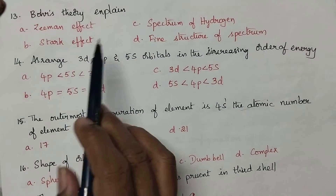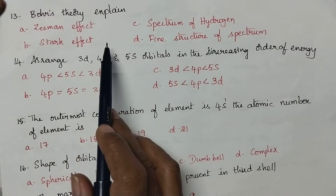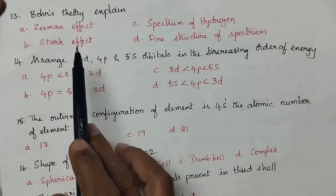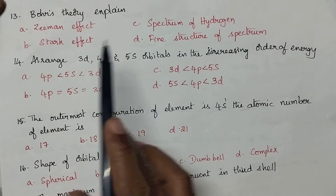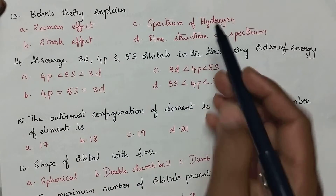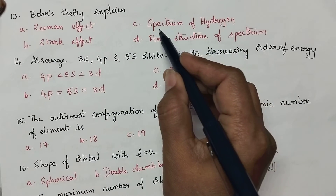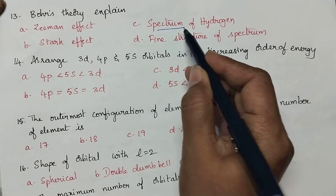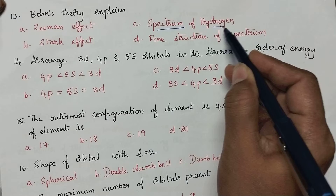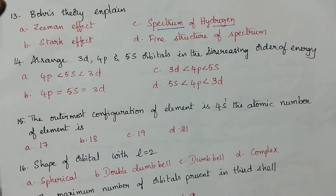Bohr's theory explains: according to Bohr's atomic theory, it explains the spectrum of hydrogen atom.